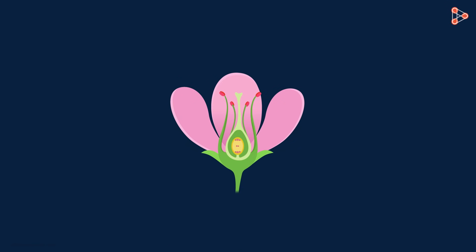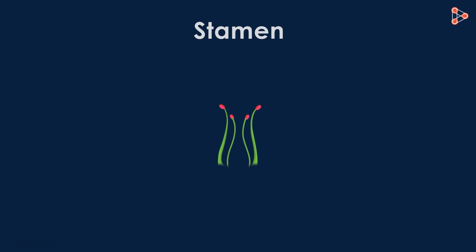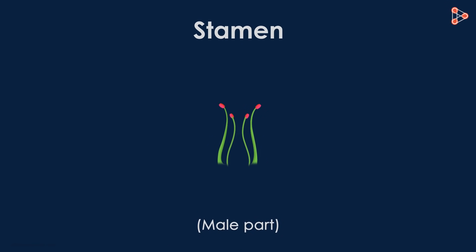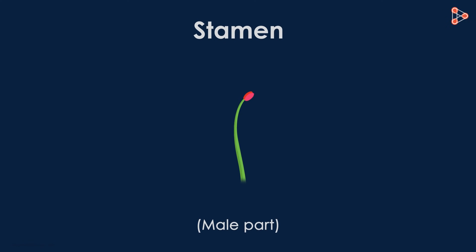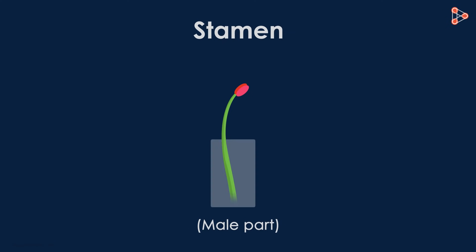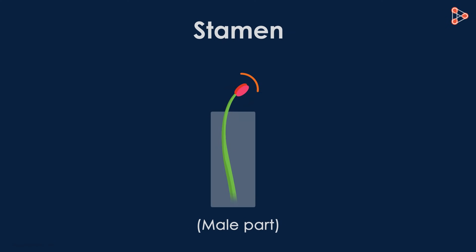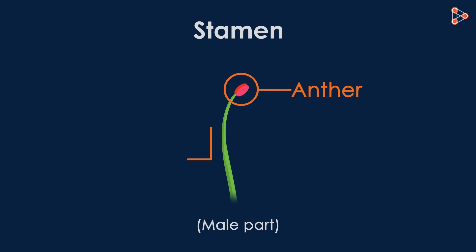To begin with, we have the stamen, which is the male part. What does the stamen look like? If we zoom in on the structure, it looks like this. The stamen has two distinct parts — the anther and the filament.